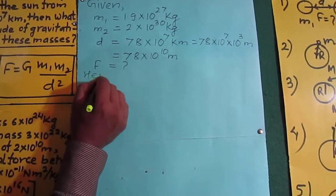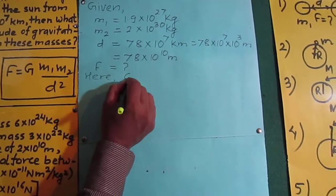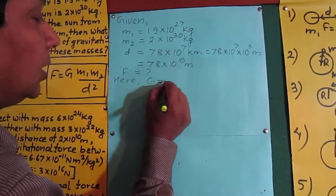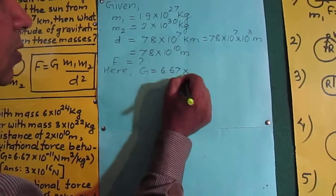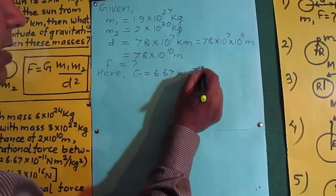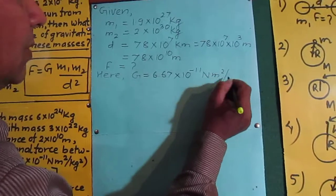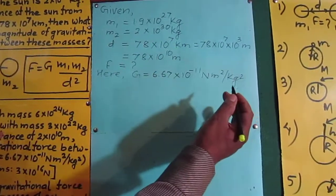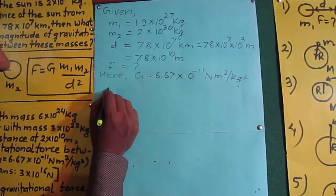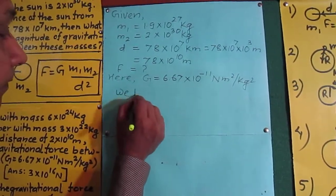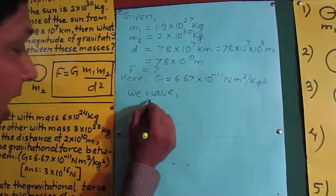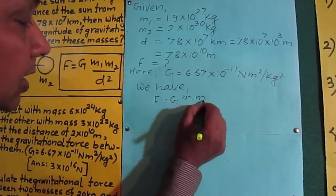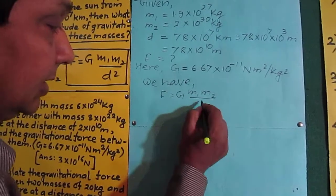The value of G is not given, but we know it: G = 6.67 × 10⁻¹¹ N·m²/kg². Now everything is complete. We are going to use the equation F = G M1 M2 / D².